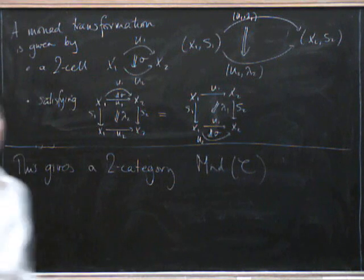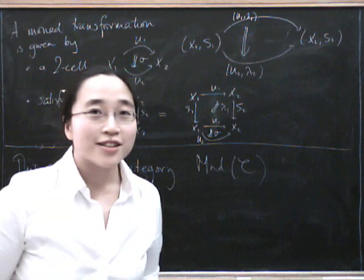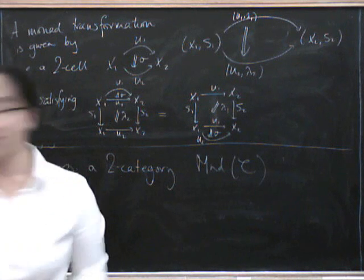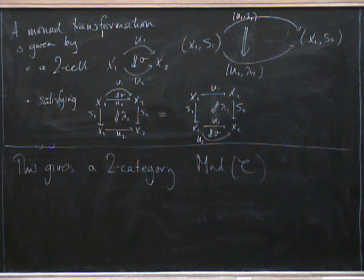So what we get is a 2-category of monads inside C. You can go home and check that it really is a 2-category — and it is going to be a 2-category, not just a 1-category, of monads in C.